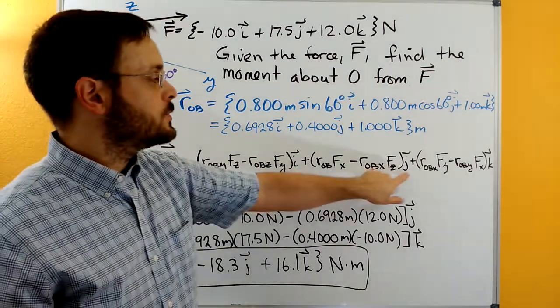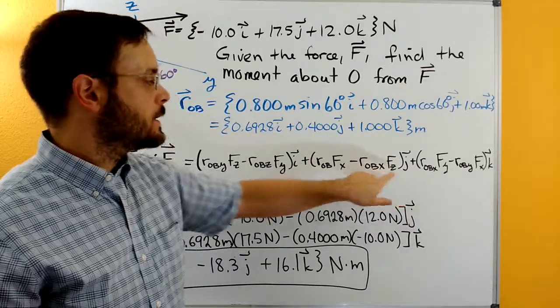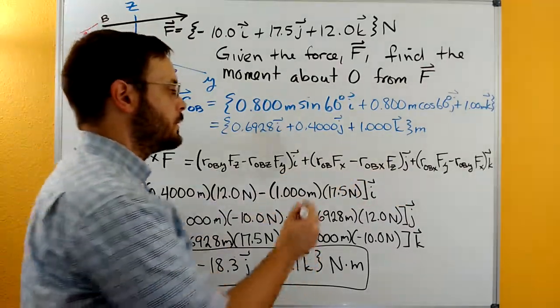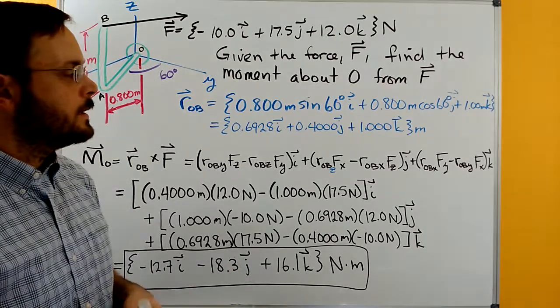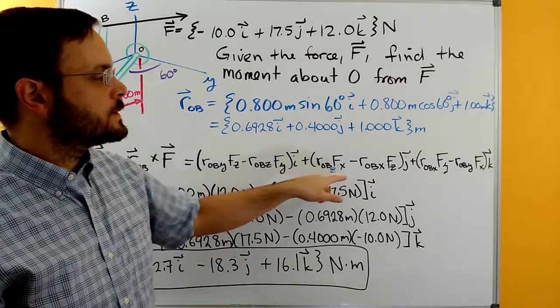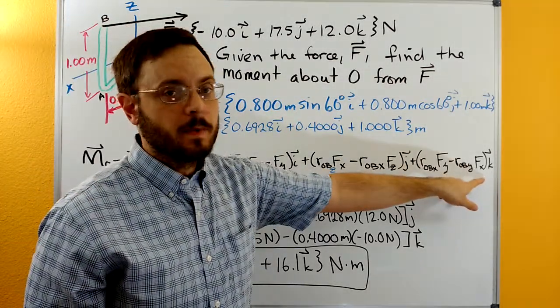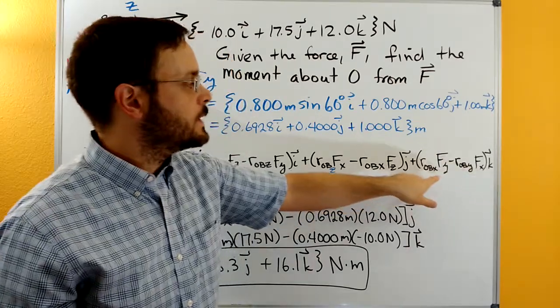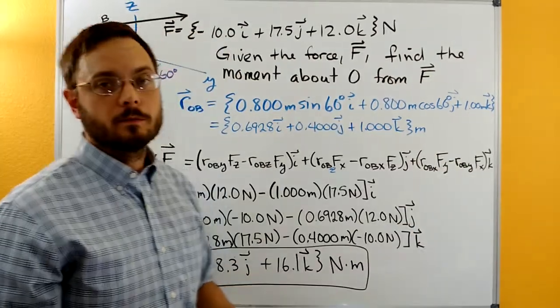Same thing for J around the Y axis. You're going to wind up with Z and X's in terms of position vectors and forces. And then for moments about the Z axis you'll wind up with X's and Y's here mixed together.